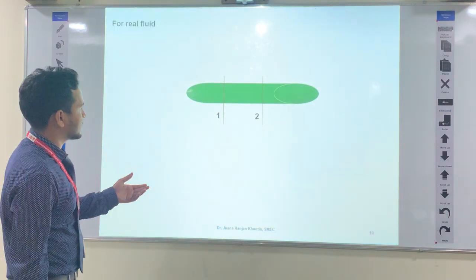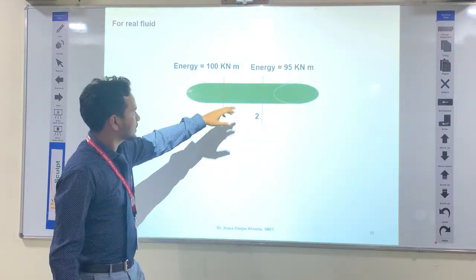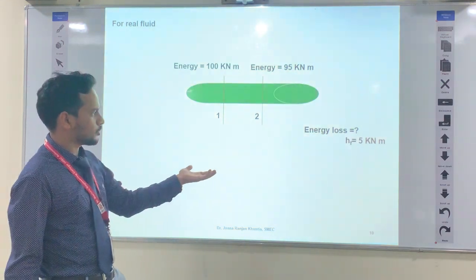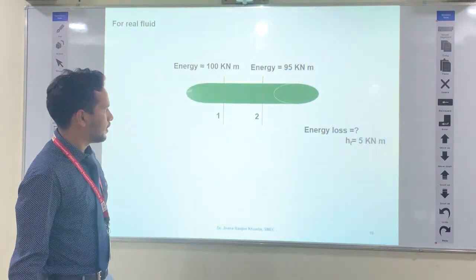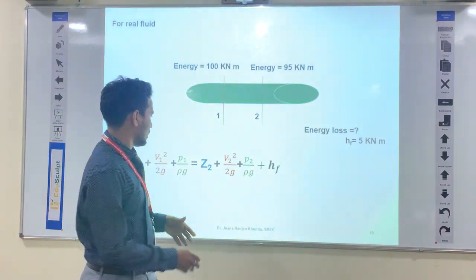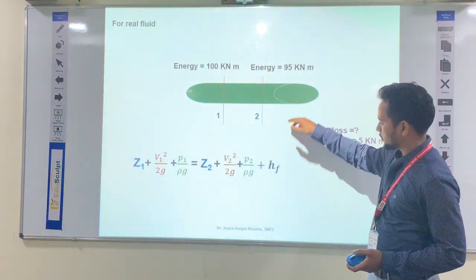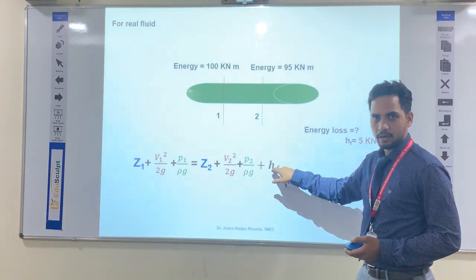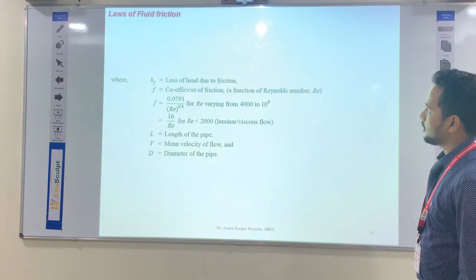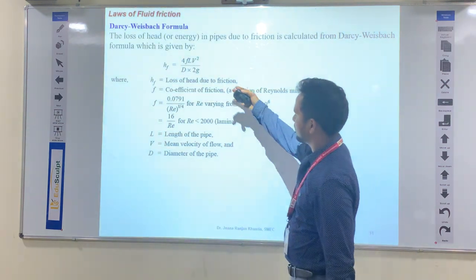For example, at section 1 the energy is 100 kN/m² and at section 2 it is 95 kN/m², so the head loss HF = 5 kN/m². This is all about head loss due to friction. The final Bernoulli equation for real fluid includes the head loss due to friction at the outlet section.